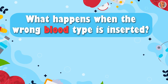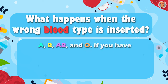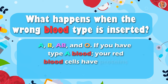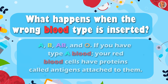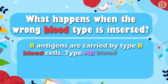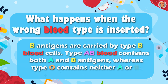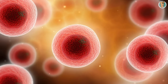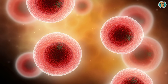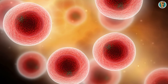Now let's talk about what happens when the wrong blood type is inserted. First, the main blood types: A, B, AB, and O. If you have type A blood, your red blood cells have proteins called antigens attached to them. Type B blood cells carry B antigens. Type AB contains both A and B antigens, whereas type O contains neither A nor B. Your immune system will create antibodies against any blood antigens that you do not have in your blood. People with type A blood produce antibodies against B antigens.